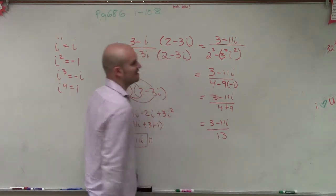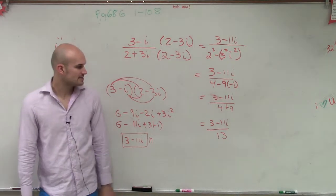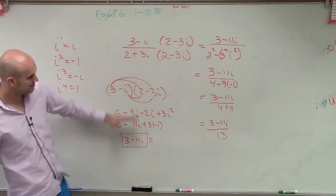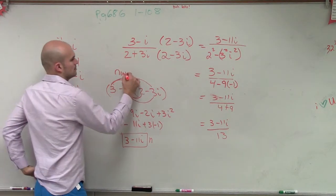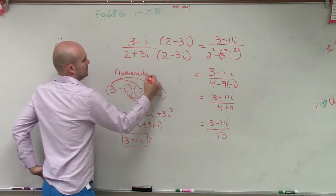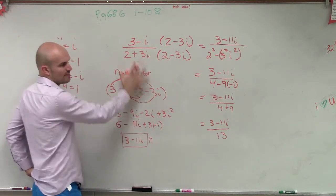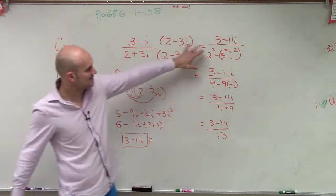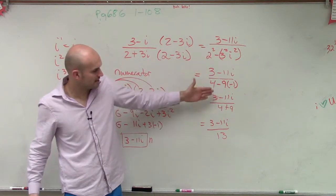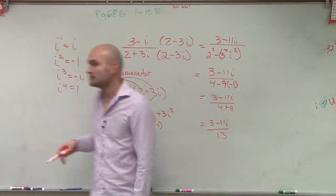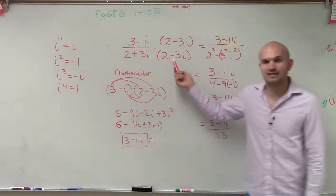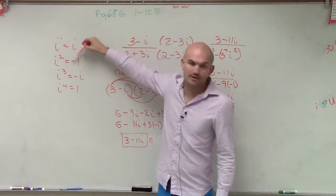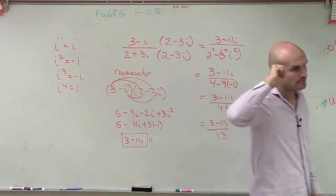which equals 3 minus 11i over 13. OK, so I did the numerator over here. So there's my work for my numerator. And then I just did the denominator, and then I just kind of rewrote it back all through there. All right? The main important thing, though, what you guys will get stuck on is remember to multiply by the conjugate. And then remember, i squared equals negative 1.